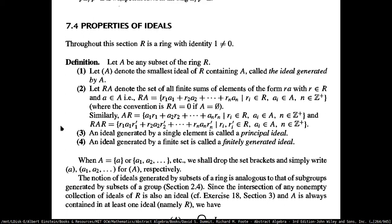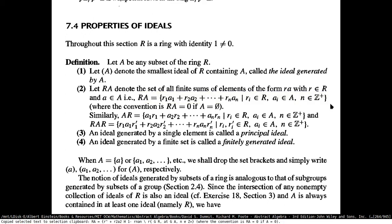Then you can have RA — the product of the ring with the ideal — which denotes the set of all finite sums of elements of this particular form. This is going to be elements from the ring and the subset A.